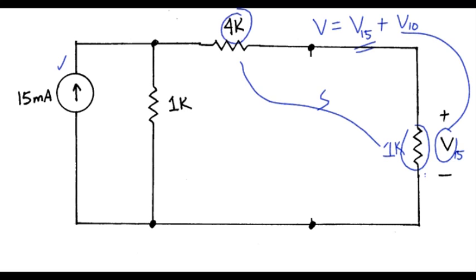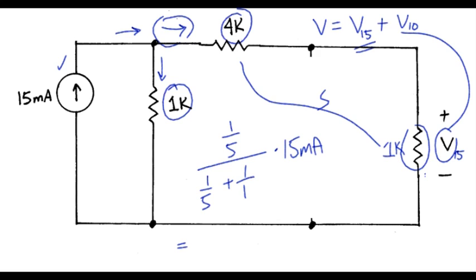However, we can make use of that to apply the current divider relationship. We've got current coming in that splits two ways. The path that we're interested in is the one that goes through the combined 4K and 1K series combination. So that conductance looks like 1 over 5. I'm leaving the K's off because everything has units of K. And then we divide by that same conductance plus the conductance of the other resistor and multiply that by 15 milliamps. That works out to be one-sixth times the current, which is 2.5 milliamps.